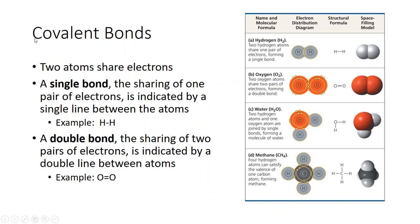The first type of bond we'll discuss is the covalent bond — covalent bonds share electrons. Hydrogen has one electron; if it shares with another hydrogen, they each have two, giving a full outer shell — represented by a single line. Oxygen has six electrons in its outer shell, so when two oxygen atoms come together they each share two electrons with the other, forming a double bond. Six plus two gives each oxygen eight electrons, so they are stable.